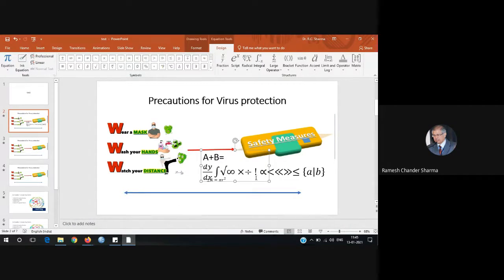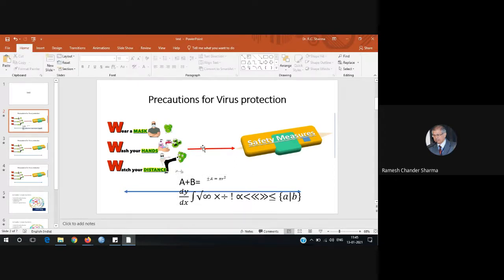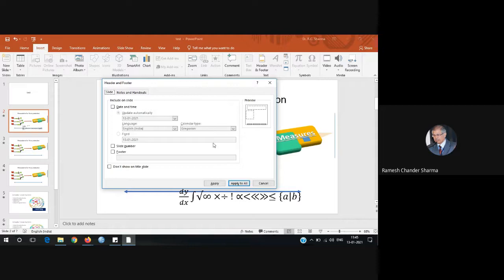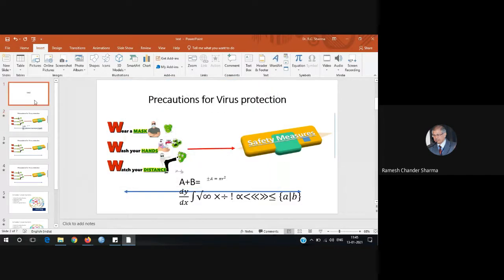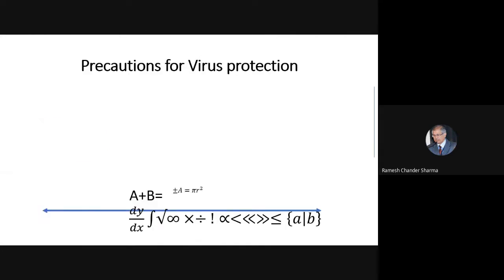So we have this way to insert equations and many other options. You can go to the Insert tab to explore further. There you can also find Header and Footer options for your presentation — including slide number and footer text, which appears at the bottom of each slide.